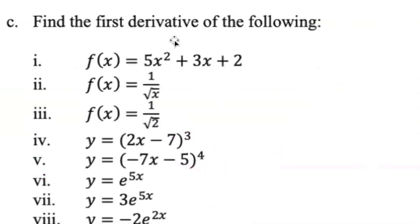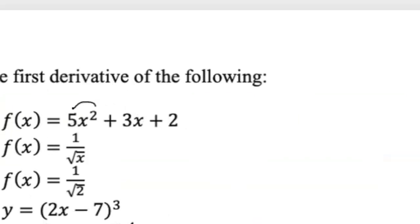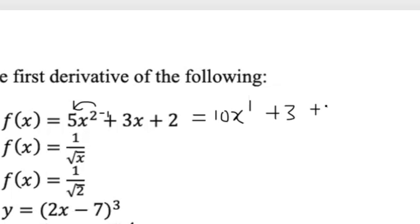Find the first derivative of 5x squared plus 3x plus 2. Multiply 5 times 2 to get 10, subtract 1 from the power to get 10x. Differentiating 3x gives 3. Differentiating the constant 2 gives 0. So the answer is f prime of x equals 10x plus 3.